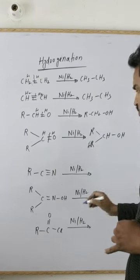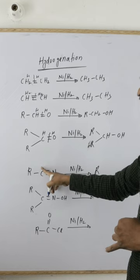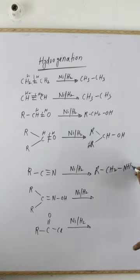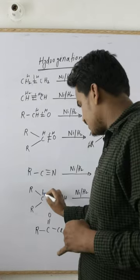What is triple bond? It means two bonds. This means RCH2 and NH2. This is the final product. It means one bond here and one hydrogen.